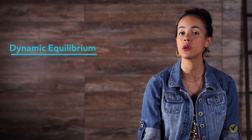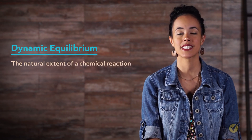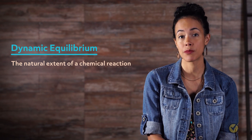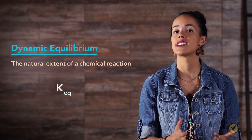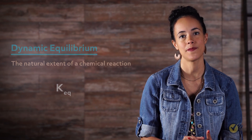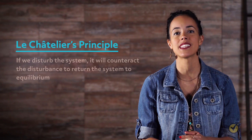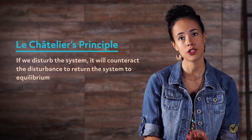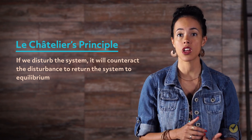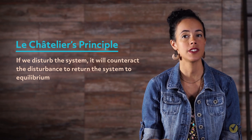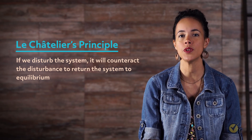Let's wrap up by summarizing what we've learned. First, we reviewed dynamic equilibrium, which is the natural extent of a chemical reaction. The system reaches a balance of products and reactants, represented by the equilibrium constant Keq — a special balance that reflects the energetics of the system. Le Chatelier's Principle states that if we disturb the system, it will counteract the disturbance to return to equilibrium. Not only is this an important concept theoretically, but as we saw with the production of ammonia, chemists also use Le Chatelier's Principle practically to manipulate reactions and yield more of the desired product. Thanks for watching, and happy studying.